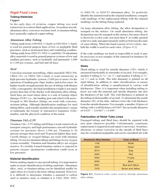However, it is difficult to determine whether a material is carbon steel or stainless steel, or whether it is 1100, 3003, 5052-O, 6061-T6, or 2024-T3 aluminum alloy. To positively identify the material used in the original installation, compare code markings of the replacement tubing with the original markings on the tubing being replaced. On large aluminum alloy tubing, the alloy designation is stamped on the surface. On small aluminum tubing, the designation may be stamped on the surface, but more often it is shown by a color code, not more than 4 inches in width, painted at the two ends and approximately midway between the ends.